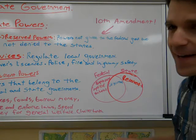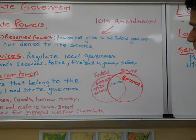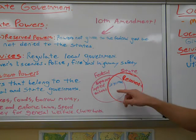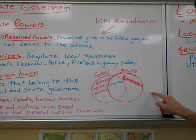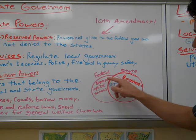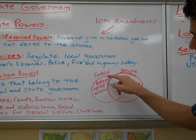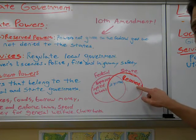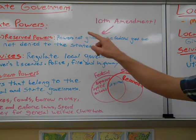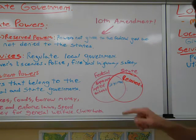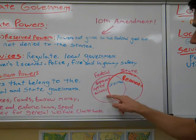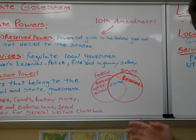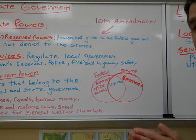To show how powers are divided under federalism, there's a Venn diagram. The federal circle contains express, implied, and inherent powers. The state circle represents reserved powers. The overlapping middle section represents concurrent powers — for example, the ability to tax is both a federal power and a state power.